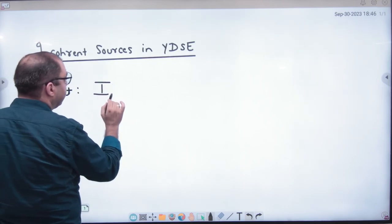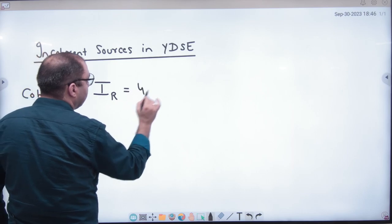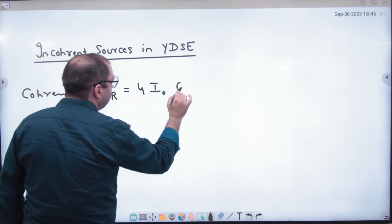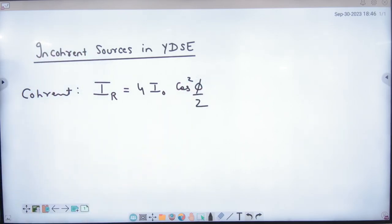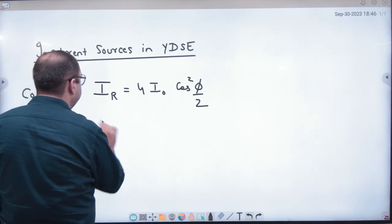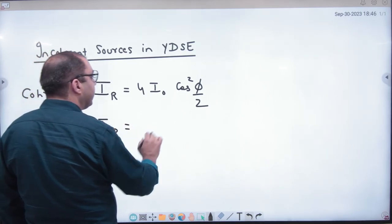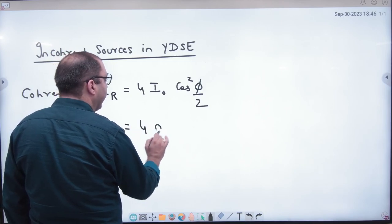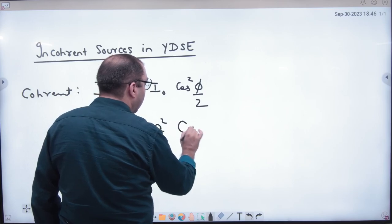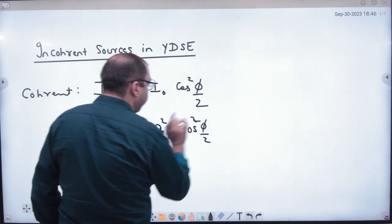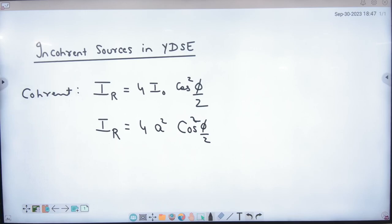The resultant intensity formula was 4 I₀ cos square φ by 2. This is the formula. Or you can write this as well. The resultant intensity is equal to 4 into A square, intensity proportional to amplitude square, cos square φ by 2. This formula is applicable when the source is coherent.